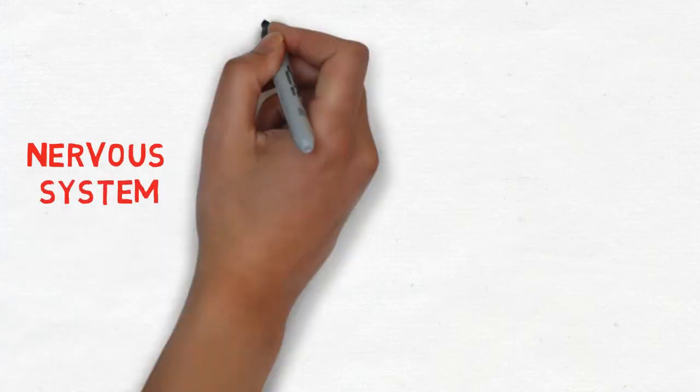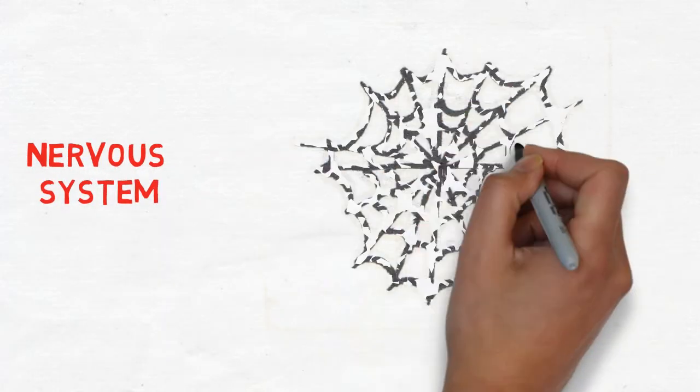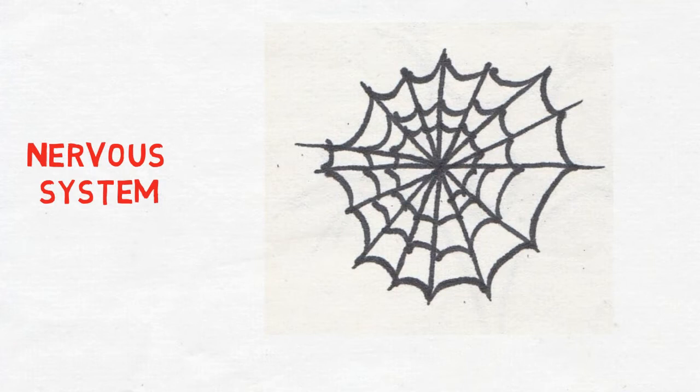The nervous system is a network of cells that orchestrates human actions, both voluntary and involuntary, through sending signals back and forth from all parts of the body.